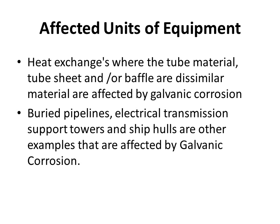Affected units and equipment: heat exchangers where the tube material, tube sheet, baffles, or dissimilar materials are present are affected by galvanic corrosion. Buried pipelines, electrical transmission support towers, and ship hulls are other examples affected by galvanic corrosion.